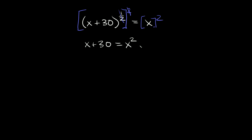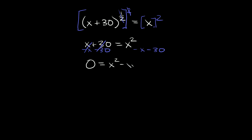Now we almost have something in standard form — we have x squared, x, and a constant. Let's move all terms to the right side by subtracting x and subtracting 30 from both sides. So then we're left with 0 is equal to x squared minus x minus 30.